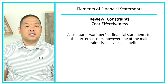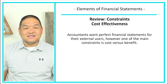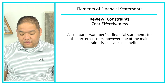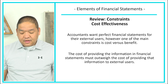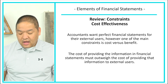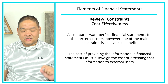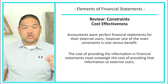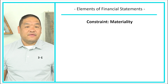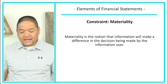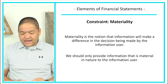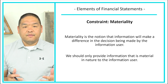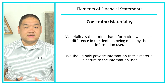Now we've got our two constraints. The first is cost effectiveness: accountants want perfect financial statements for external users, but the cost of producing that information must be outweighed by the benefit gained. There must be some benefit in order to report that information. The second constraint is materiality — the notion that information will make a difference in the decision being made by the information user. We should only provide information that is material in nature. If it's not material, we don't need to report it.